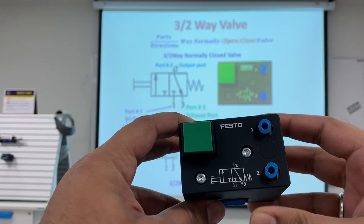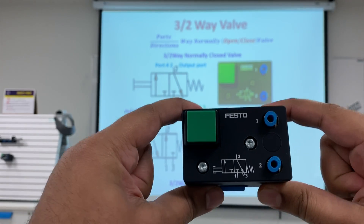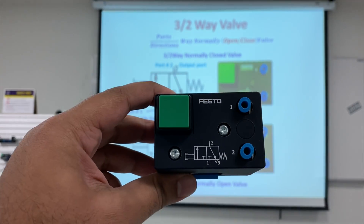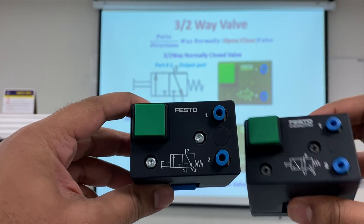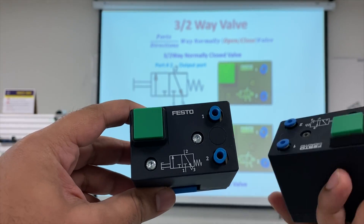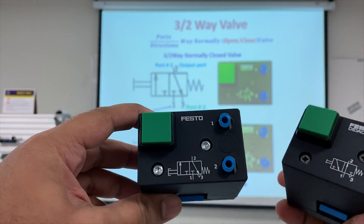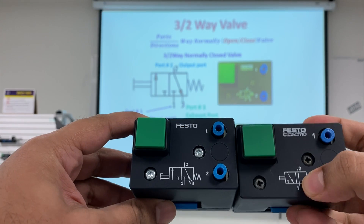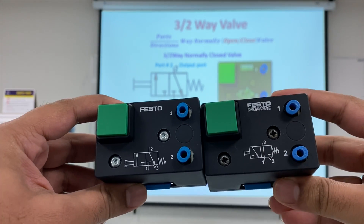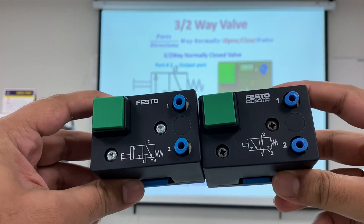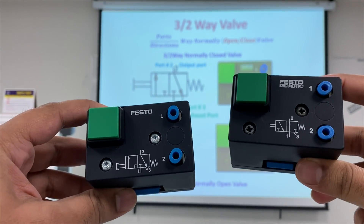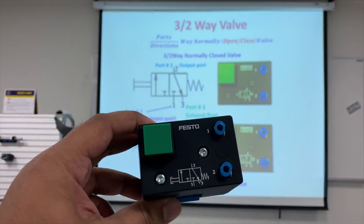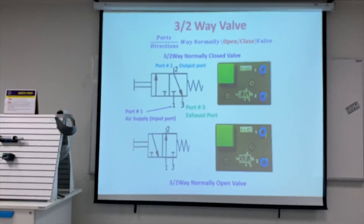The real component here is a three-by-two way normally closed valve. It has three ports: port one is the air supply, port two is the output, and port three is the exhaust. The T symbol indicates the air supply is closed — this is the normally closed valve. The other valve I am holding has port one directly connected to port two, so it is a three-by-two way normally open valve.